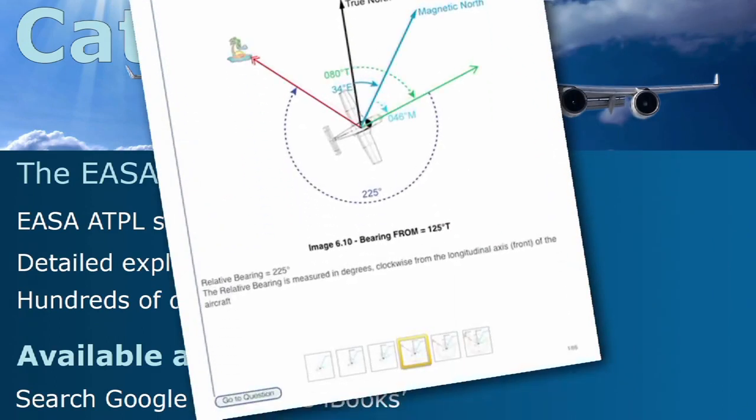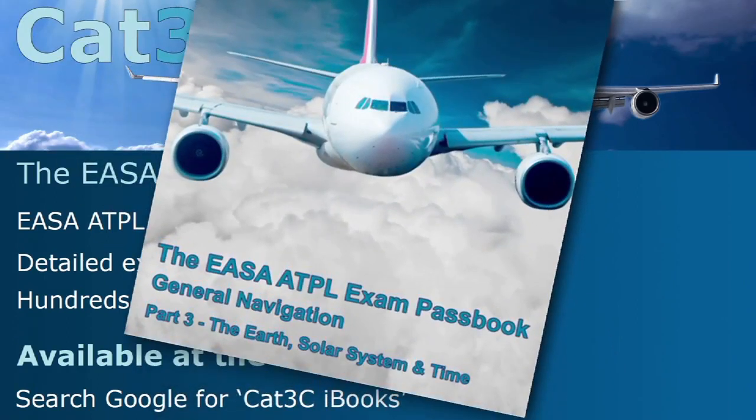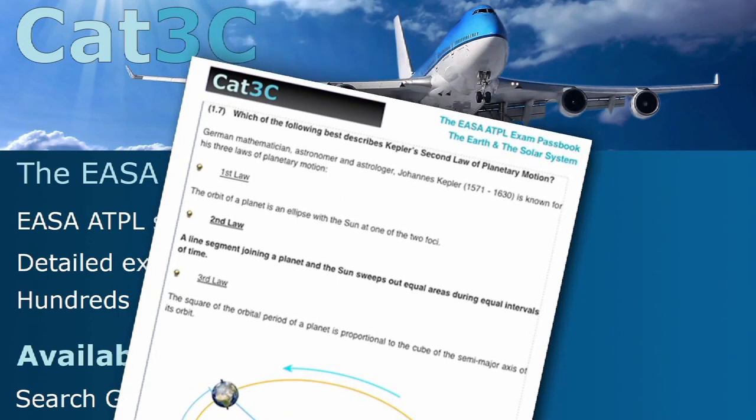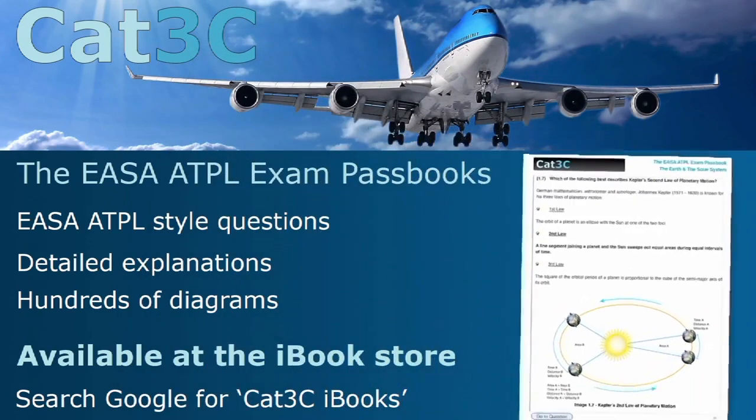The passbooks contain hundreds of exam-style questions and are supported by clear, in-depth explanations and interactive diagrams. The link to the iBooks can be found on the webpage below or at the Cat3C website at the Bookstore tab.